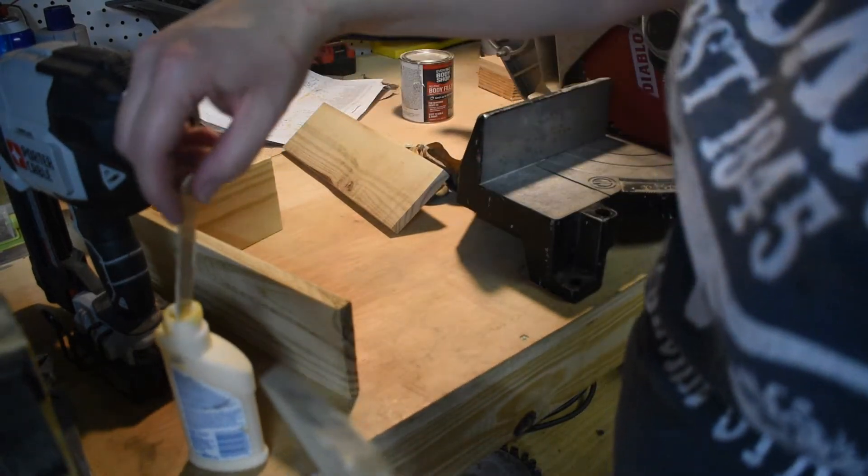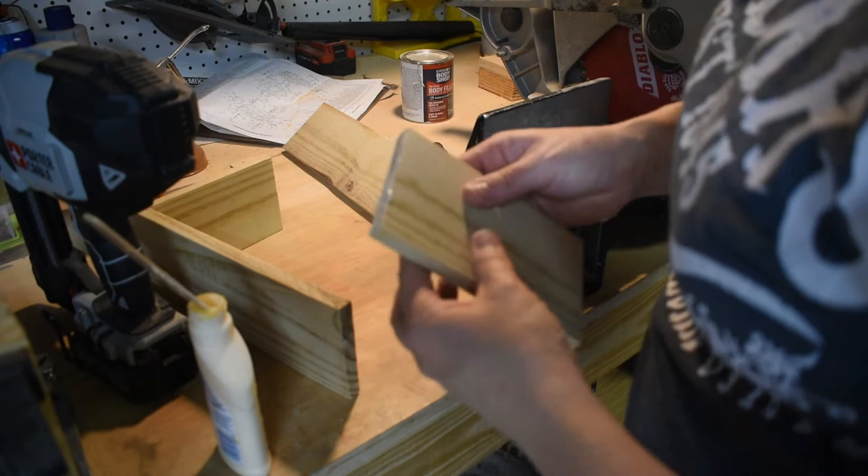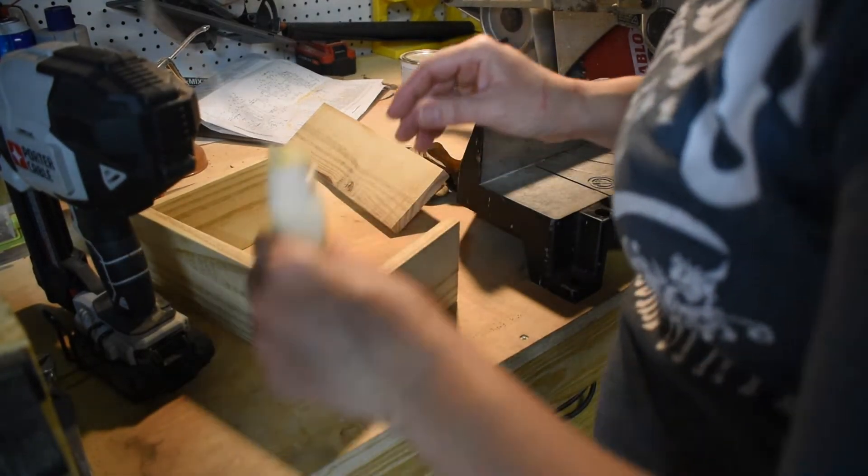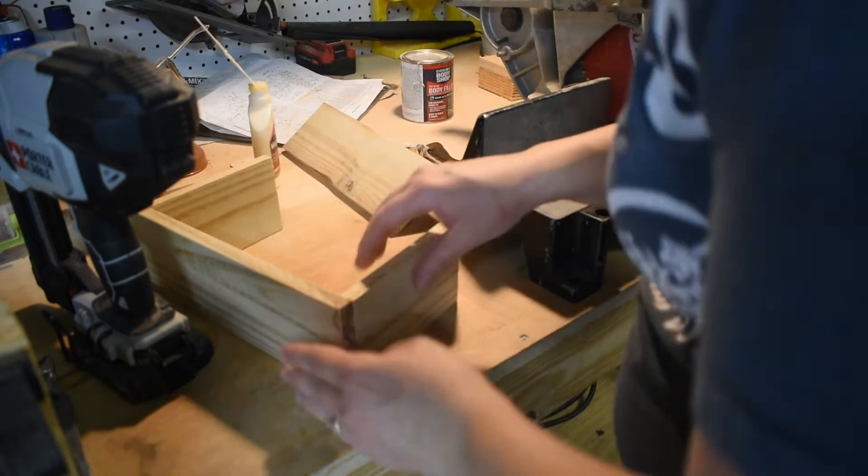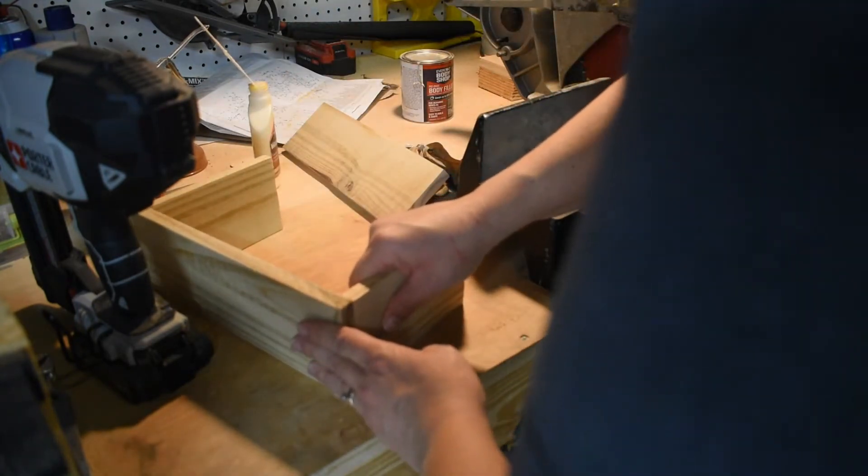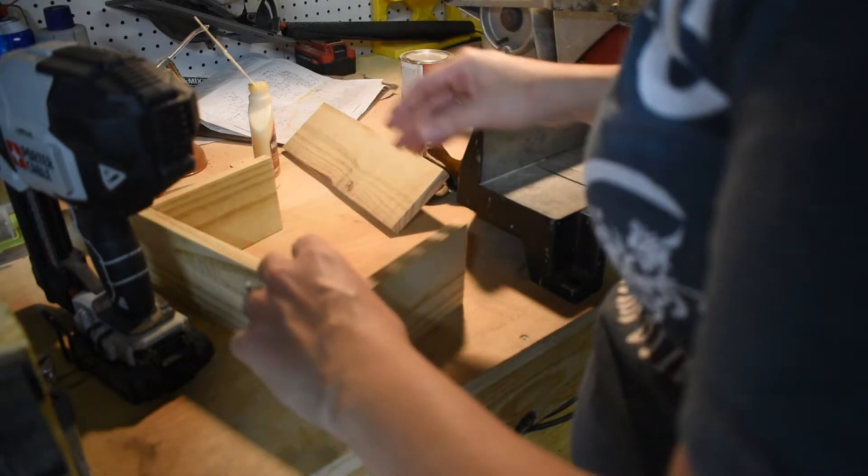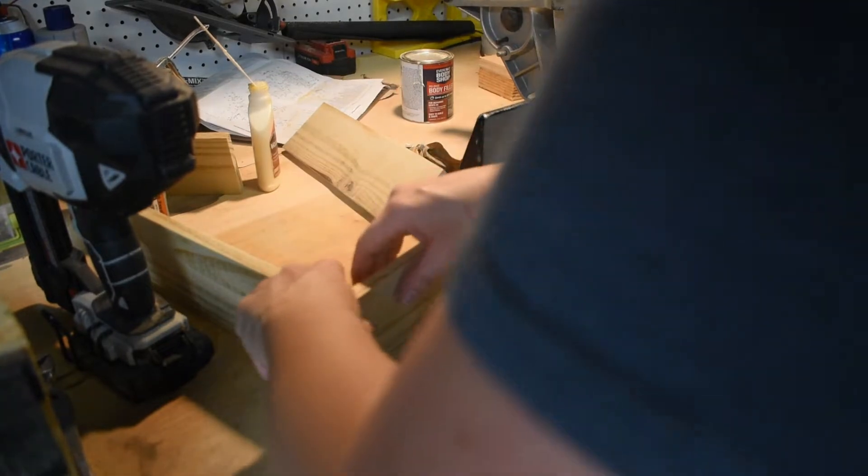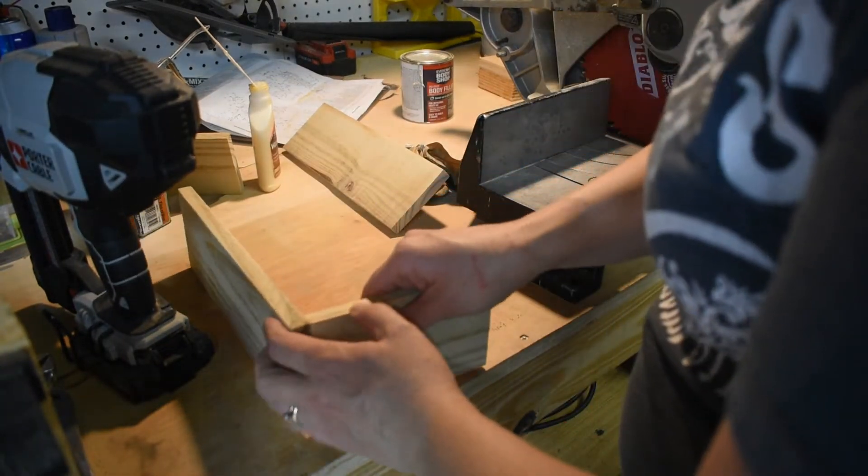My husband ends up doing that for me later on, he's so sweet. But I just took the top off and I just used the popsicle stick to apply my wood glue. So then I press really hard and then I use my nail gun to nail in the two side pieces first, the two short pieces first, and then I go and do the other long piece last.